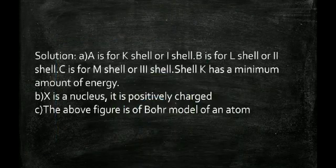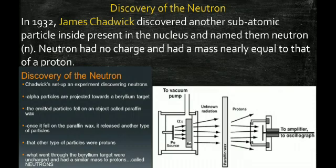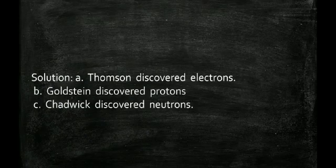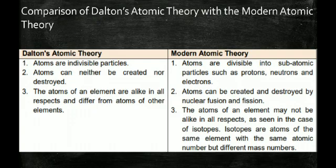The neutron was discovered when scientists found that the atomic mass did not match the combined mass of protons and electrons, suggesting another particle inside the atom. James Chadwick discovered neutrons, the third subatomic particle. Neutrons carry no charge — they are neutral. In summary: Thomson discovered the electron, E. Goldstein discovered the proton, and Chadwick discovered the neutron.